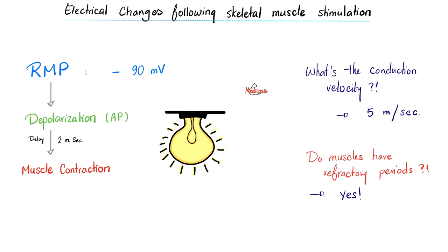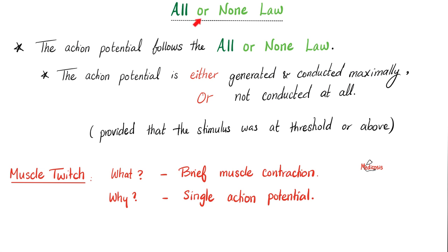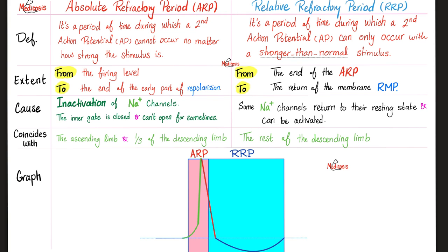Remember the light bulb analogy: electricity (depolarization) must come first, then light emission (muscle contraction). The action potential follows the all-or-none law — it's either generated or not, no 50% or 70%. There is an absolute refractory period where no impulse propagates no matter how strong the stimulus, and a relative refractory period where a super-strong stimulus might propagate. Please refer to the physiology playlist for more detail.